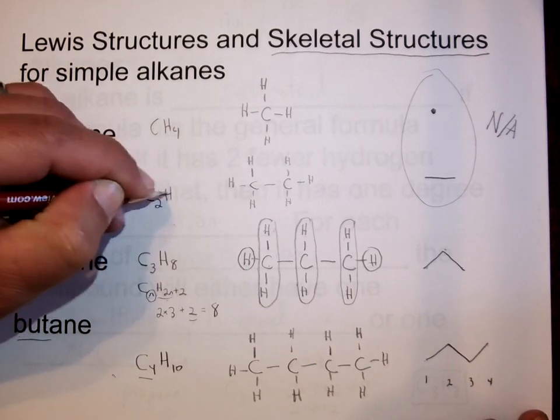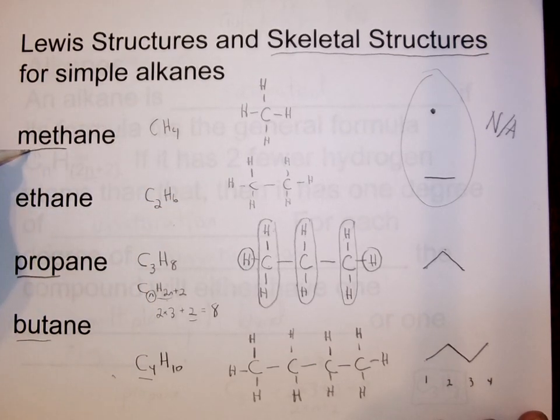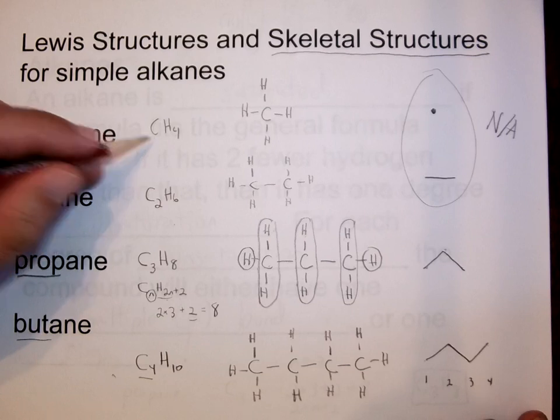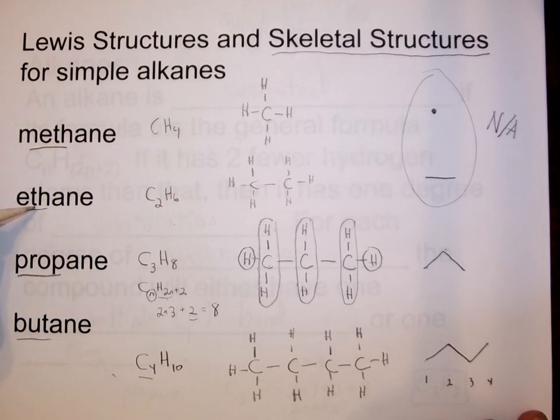So methane, meth means one carbon, CH4. Ethane, eth means two carbons, C2H6. Propane, prop means three carbons, C3H8. Butane, but means four carbons, C4H10. So there's four simple alkanes, their Lewis structures, and for two of them, useful skeletal structures for propane and butane.